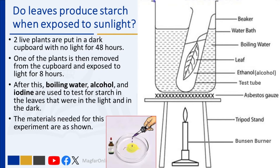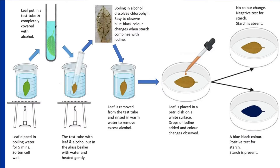After this, boiling water, alcohol, and iodine are used to test for starch in the leaves that were in the light and the leaves that were in the dark. The materials needed for this experiment are shown in the diagrams on the right — take some time to identify these. To test for starch, a leaf is collected from a plant that has been exposed to sunlight, then dipped in boiling water in a beaker for about five minutes.